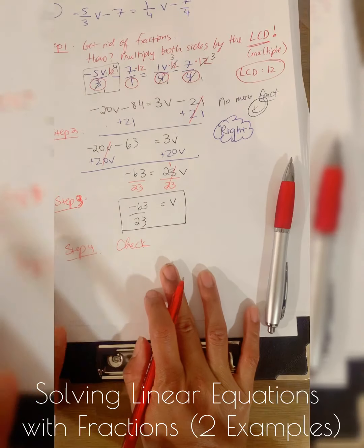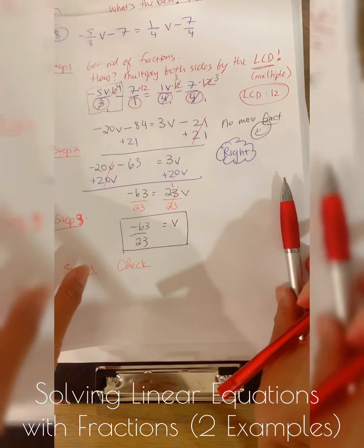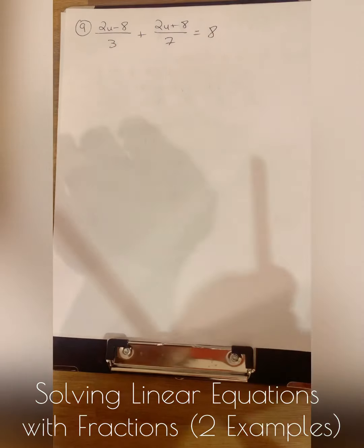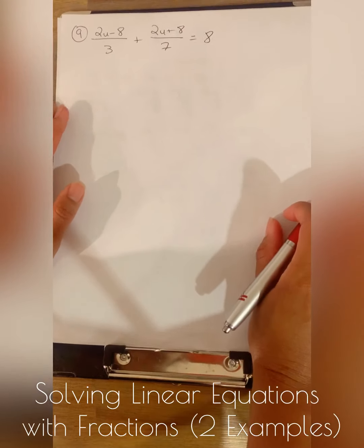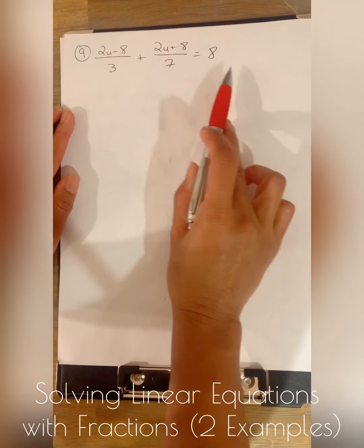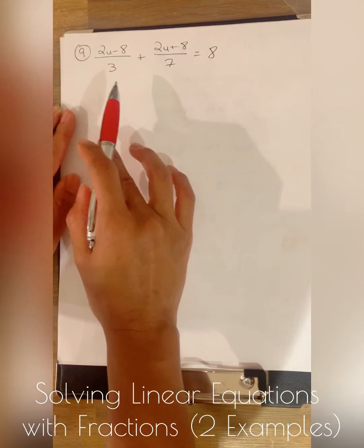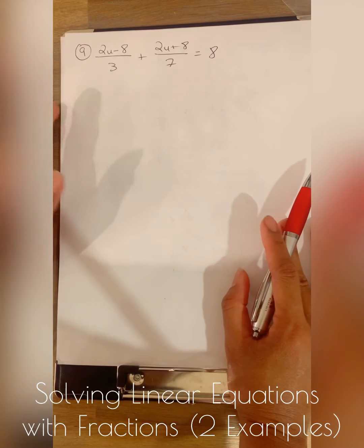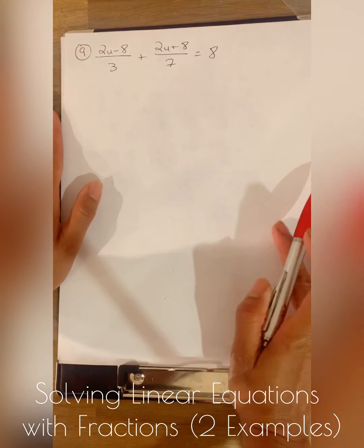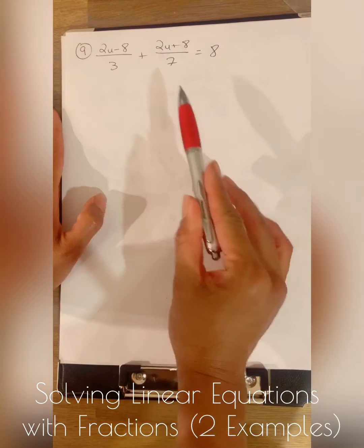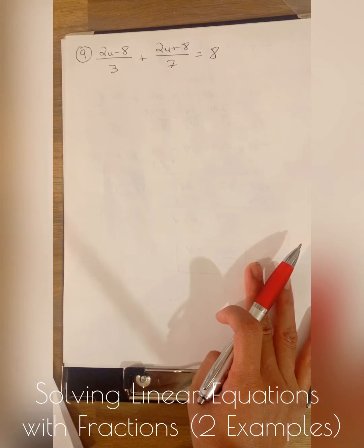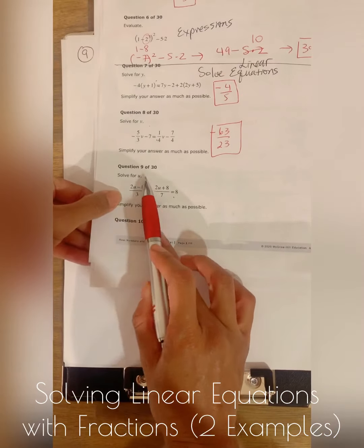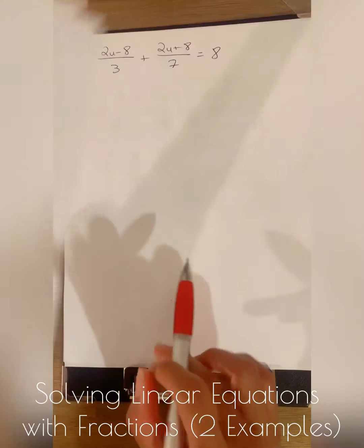You can always do step four — check your work by plugging the answer back into the original and confirming the left side equals the right side. Here is another example of solving equations with fractions. I'll go through this a bit faster than numbers seven and eight, but feel free to pause and rewind. We're now going to solve number nine — solve for u.